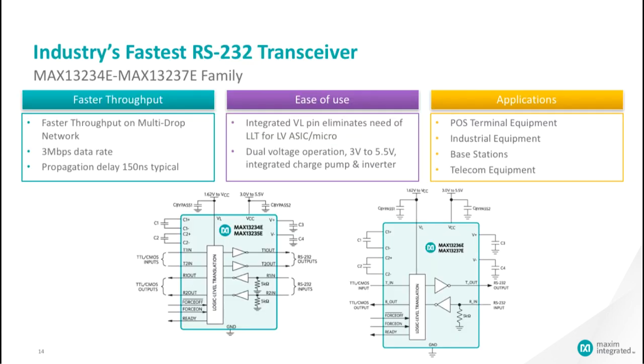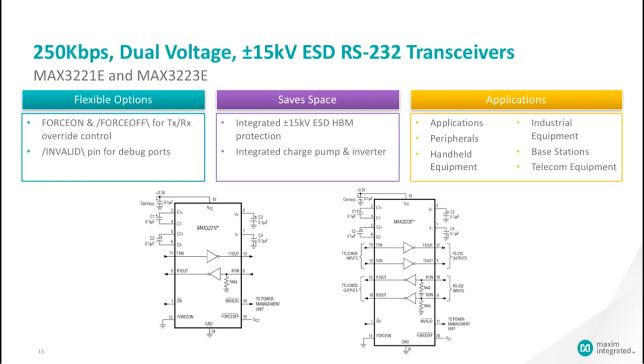This is an example of an RS-232 transceiver device. The MAX-13234E and MAX-13237E family is the fastest RS-232 transceiver on the market. These parts, MAX-3221E and MAX-3223E, are examples of RS-232 transceivers having flexible options of force on, force off, and invalid.